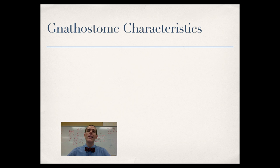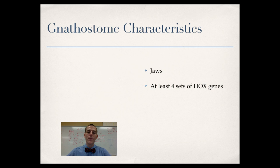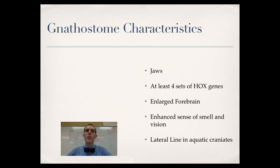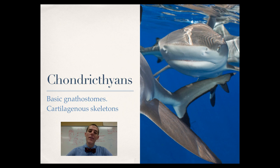Stepping forward, we move up to the gnathostomes — the jawed mouth. Hagfishes didn't have jaws, just that big round sucker cup. Gnathostomes have jaws, at least four sets of Hox genes setting up a complex body plan, and an enlarged forebrain allowing enhanced senses of smell and vision, plus learning and planning. Aquatic gnathostomes also have a lateral line — an organ running down their sides in fishes and sharks that senses pressure changes and vibrations in the water. The most basic gnathostome is the chondrichthyes: sharks, rays, and skates, whose skeletons are made out of cartilage.